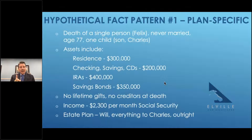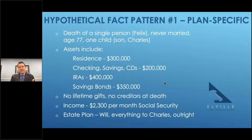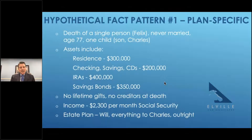Charles has until the fall of the year following Felix's death to make that death claim — you don't want to wait that long, but that's the deadline. Is there any inheritance tax? No — there is no 10% inheritance tax because Charles is a lineal descendant. So Charles gets a $400,000 inherited IRA. Under the SECURE Act rules, Charles — who is apparently healthy and well — gets 10 years to take this IRA out and pay tax on it. He is not exempt: not disabled, not chronically ill, not a surviving spouse, not less than 10 years younger than a sibling, and not a minor. He does not meet any of the five exceptions to the SECURE Act, so he has 10 years.